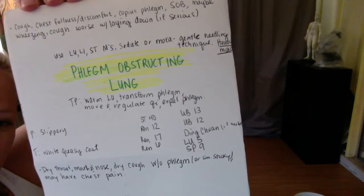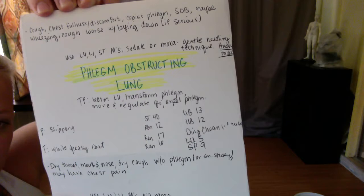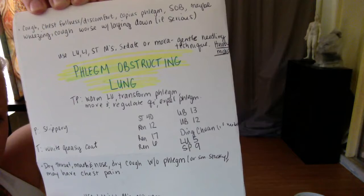Phlegm obstructing the lung pulse is slippery, tongue has white greasy coat. Treatment principle: warm lung, transform phlegm, move and regulate chi, expel phlegm.